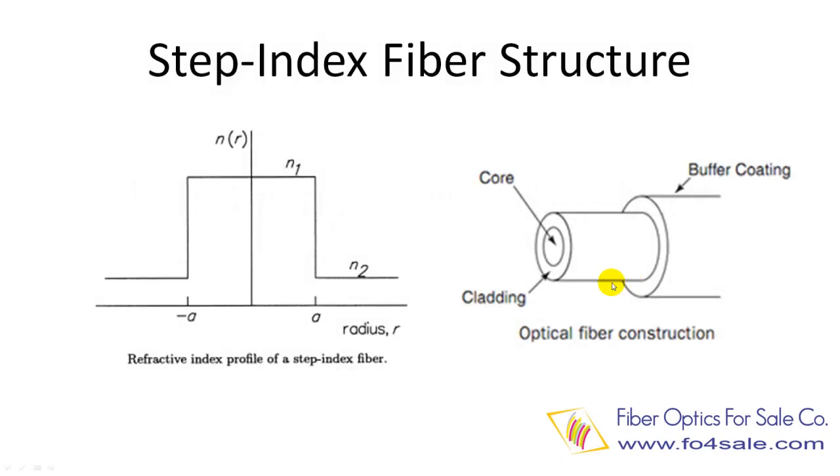First, let's look at a glass fiber structure. It is composed of three cylindrical parts. The center is called fiber core, the next layer is called cladding, and the outermost layer is called buffer coating.